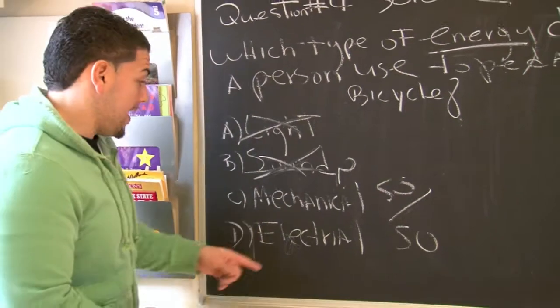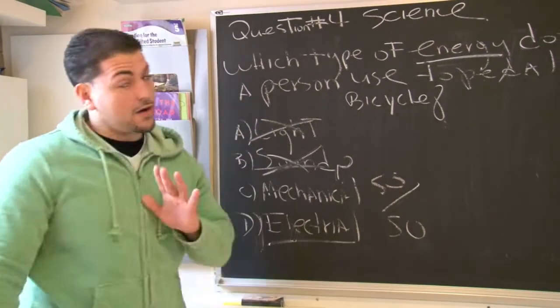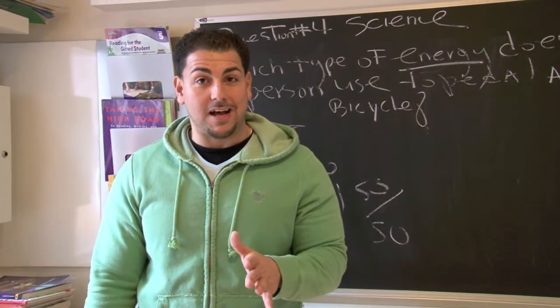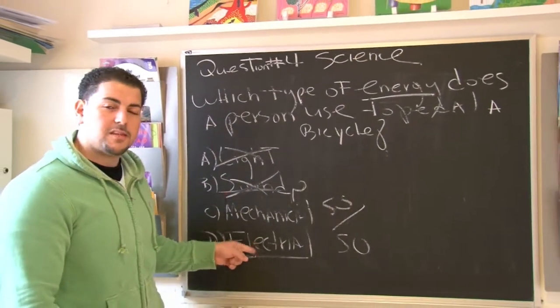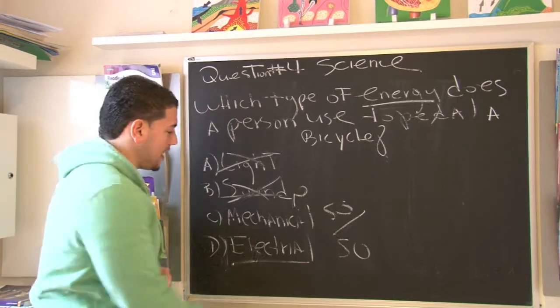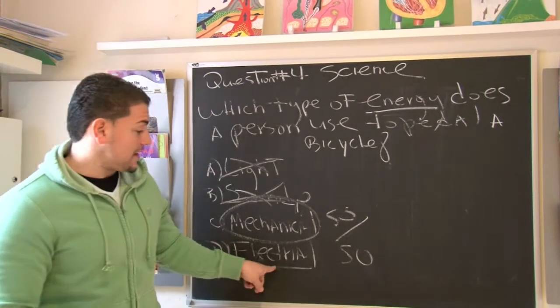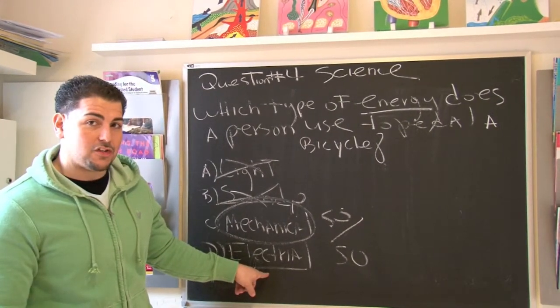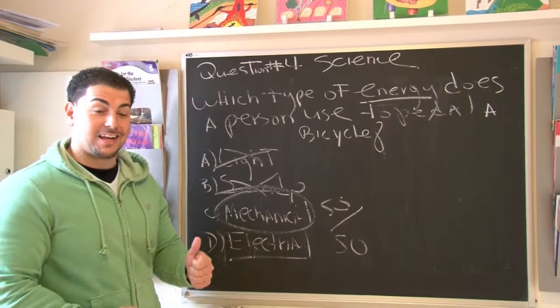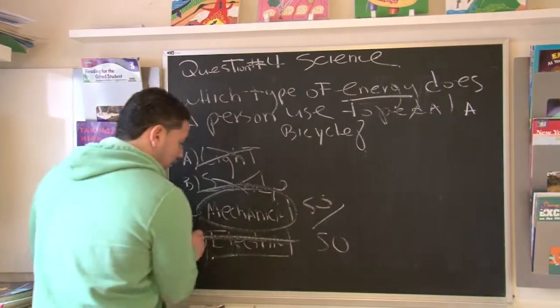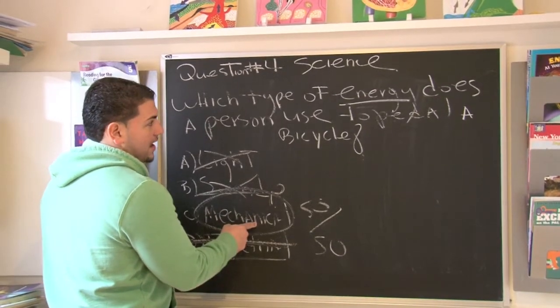Let's just check number four really quick. It says electrical. Now, I know you guys have seen those electrical bikes out there because those are the people that don't really like to exercise. But for the purposes of this question, the best answer is mechanical. I can see why you might get confused by electrical. But we're talking about old school style here where people still use their legs. So electrical is out. Mechanical is the right answer.